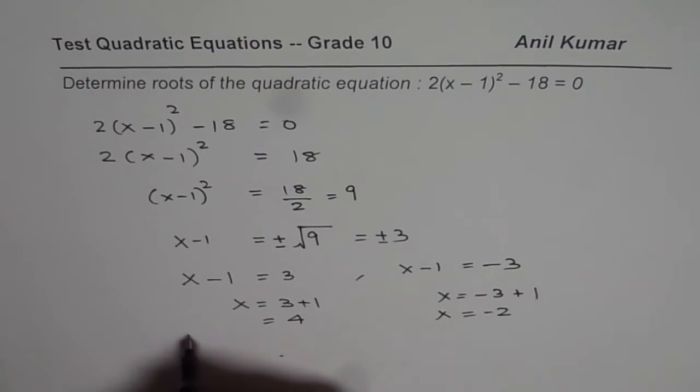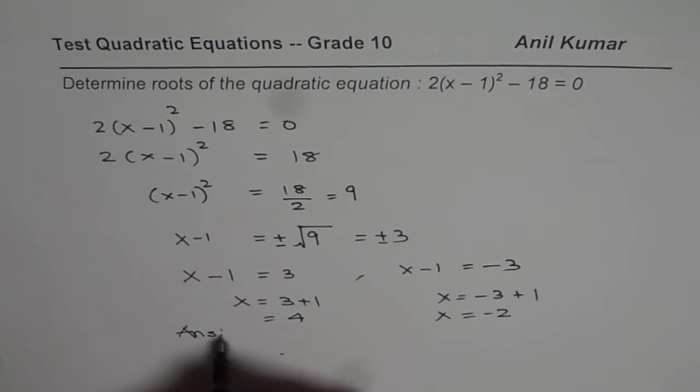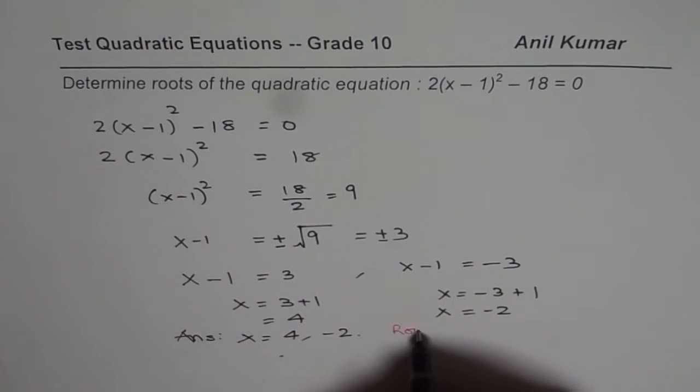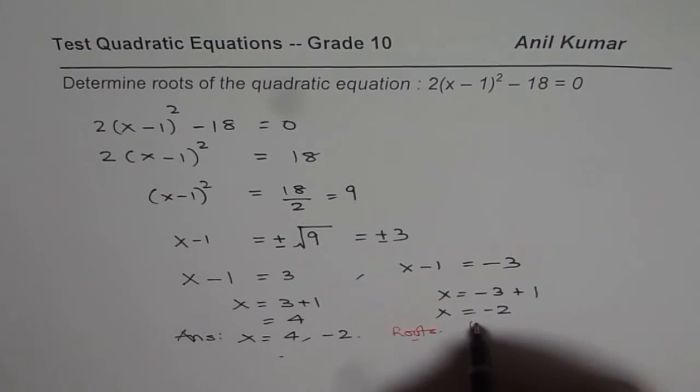So we get 2 solutions and we will write down our answer as x equals to 4 and x equals to minus 2. So these are the roots of the equation, means x intercepts.